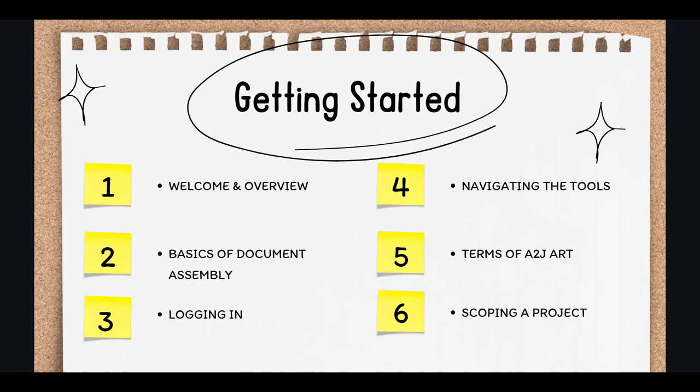So let's dive in. There are six parts to Section 1: getting started. In Part 1, I'll give you a welcome and brief overview to the access to justice crisis and how form automation helps to close the justice gap for hundreds of thousands of people each year.